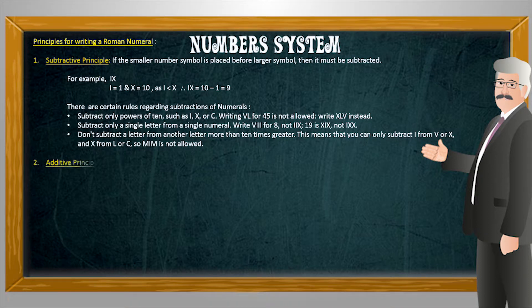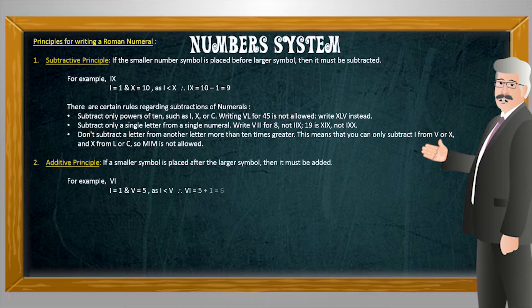Second principle is the additive principle which states that if a smaller symbol is placed after the larger symbol then it must be added. For example, in case of number six, six is represented by symbols VI. Here value of I is one and value of V is five.